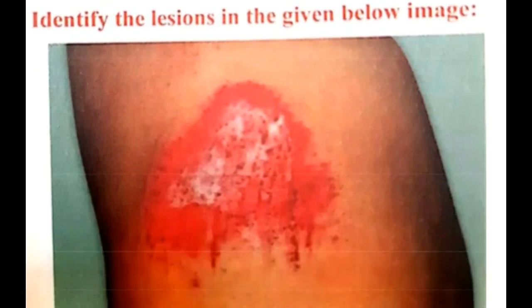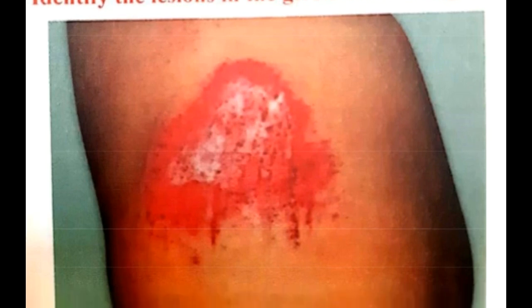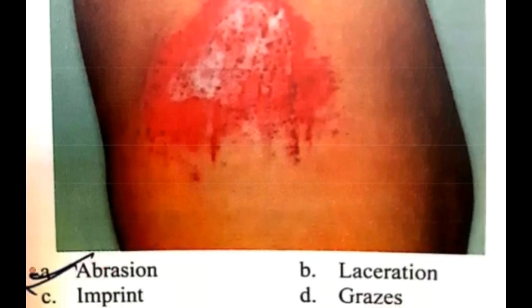Next question: identify the lesion shown in the image. The lesion involves only the epidermis — only the superficial layers of the epidermis are involved — and you can see grazing or surface impressions. This is an abrasion.